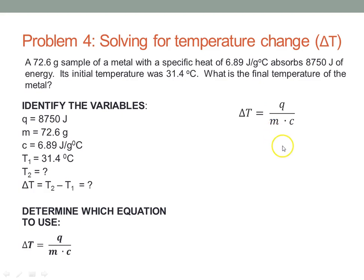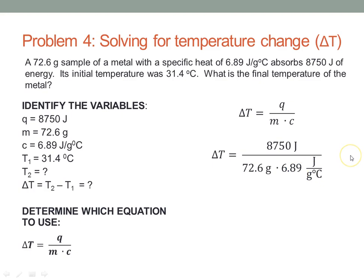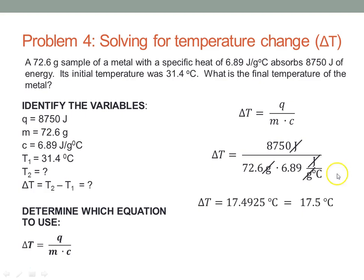Plugging in our numbers: 8750 divided by 72.6 and divided by 6.89. Checking units: joules cancels joules, grams cancels grams, and we're left with degrees C. Our delta T comes out to 17.4925 degrees C. We have three significant digits for all measurements, so we round to 17.5 degrees C.